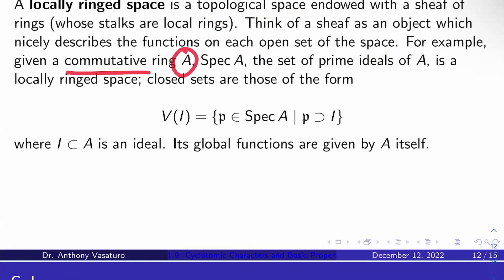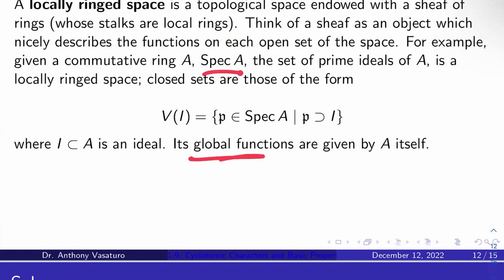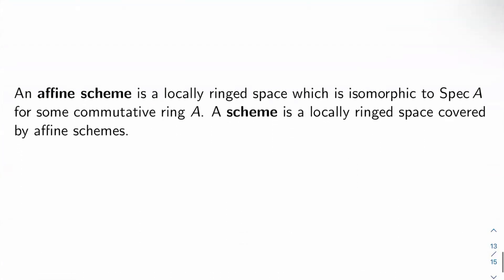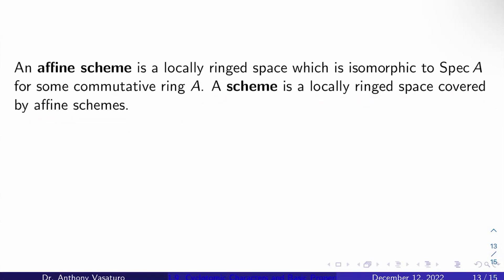For example, if I give you a commutative ring A, then Spec A — the set of prime ideals of A, the spectrum — is a locally ringed space. The topology is the Zariski topology: closed sets are of the form V(I), the set of prime ideals in Spec A containing an ideal I. The global functions on the entirety of Spec A are just the ring A itself. An affine scheme is a locally ringed space isomorphic to Spec A for some commutative ring A, and a scheme is a locally ringed space covered by affine schemes.